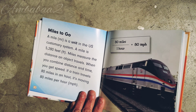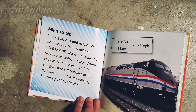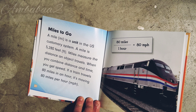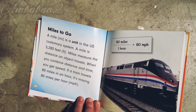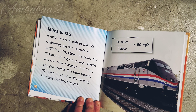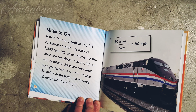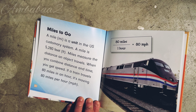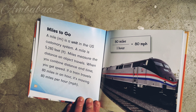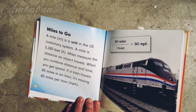Miles to go: A mile is a unit in the US customary system. One mile is five thousand two hundred and eighty feet. Miles measure the distance an object travels. When you combine distance and time, you get speed. If a train travels 80 miles in an hour, it's moving 80 miles per hour.